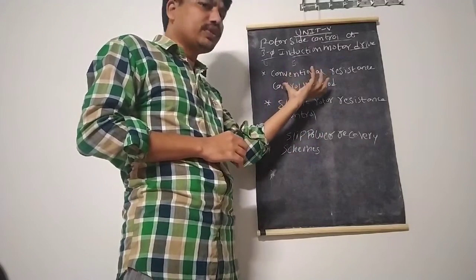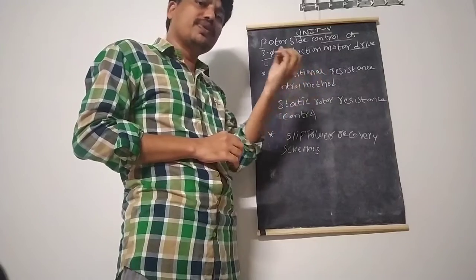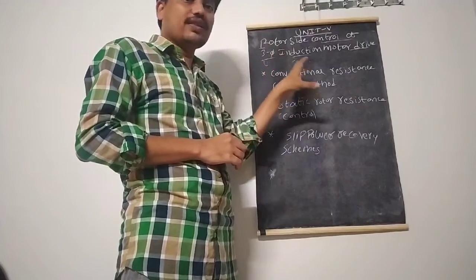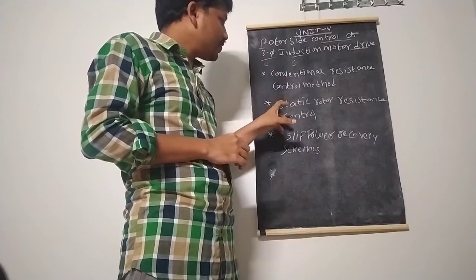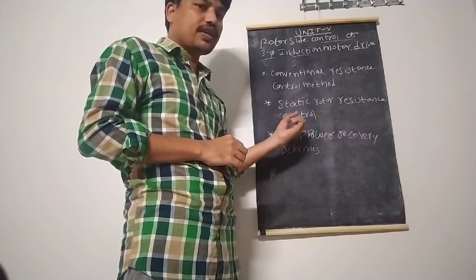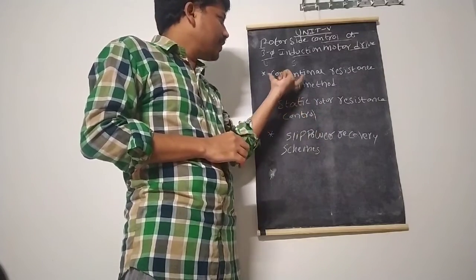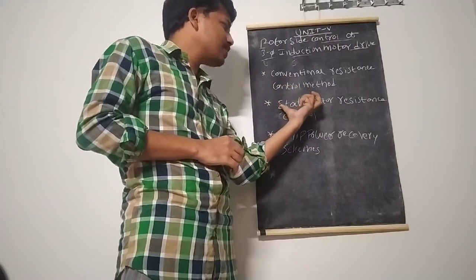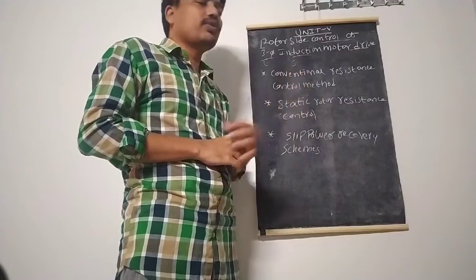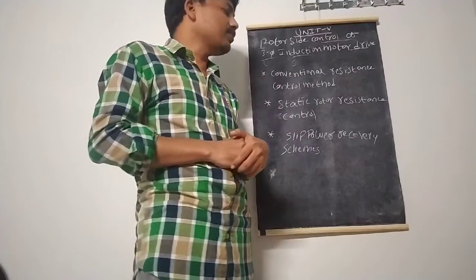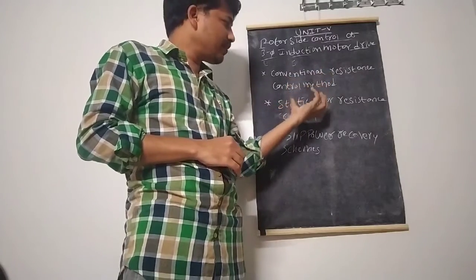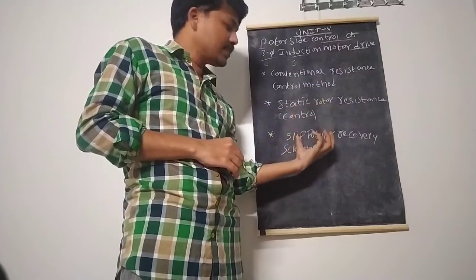In the conventional resistance control method, we know how induction motor speed can be controlled. The starting topics of this syllabus are: first, static rotor resistance control, and second, slip power recovery schemes, each having sub-topics. Before starting the actual syllabus content under the JNTU syllabus, we will briefly discuss the conventional rotor resistance control method to provide background, followed by the static rotor resistance control method and the slip power recovery schemes.